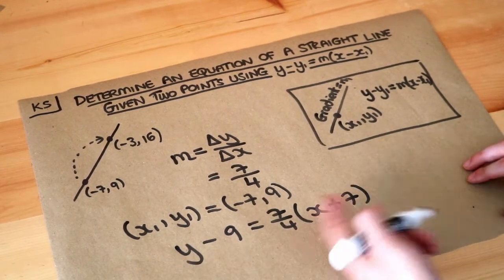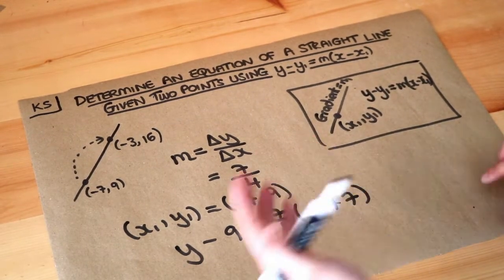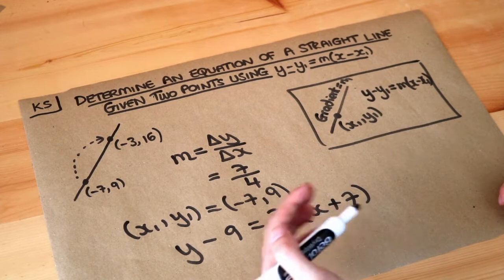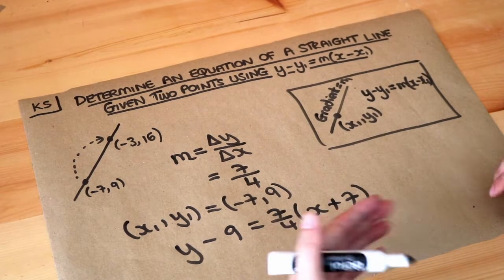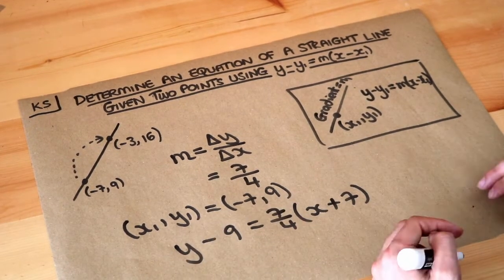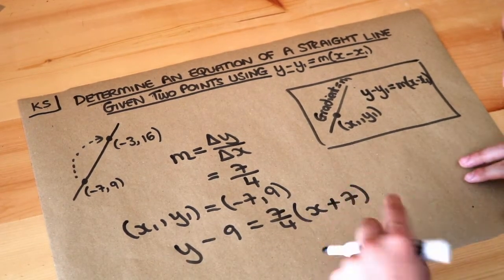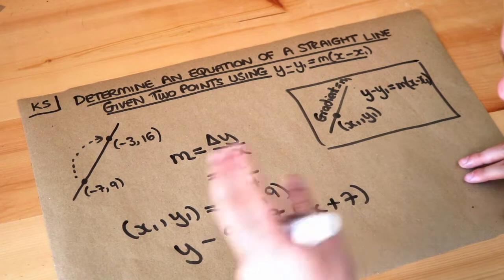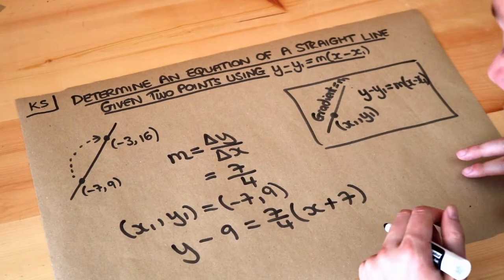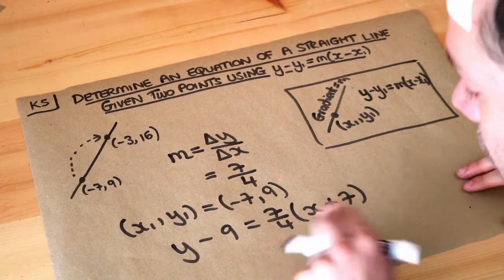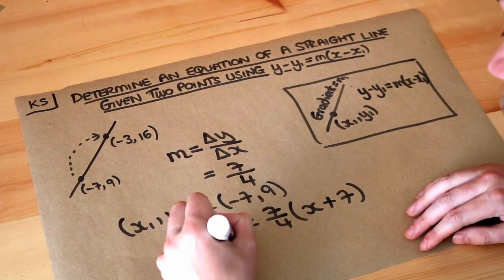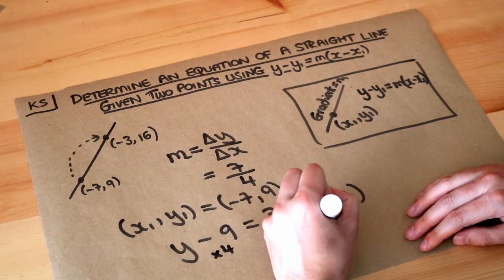That could be the final answer. If the question doesn't ask you to put the equation in a particular form, that's absolutely fine. But if we're asked to have no fractions — just integers — then we don't like the 'over 4', so we multiply both sides of the equation by 4.